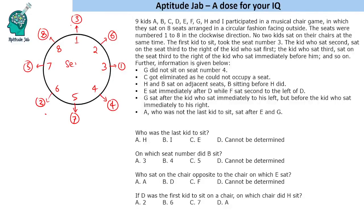The numbers inside are the seat numbers and the numbers outside are the sitting order. Now let us read the statements and fill in the positions. G did not sit on seat number 4. C got eliminated and could not occupy a seat, so the remaining 8 of the 9 kids are sitting. H and B sat on adjacent seats. E sat immediately after D, while F sat second to the left of D. A, who was not the last kid to sit, sat after E and G.